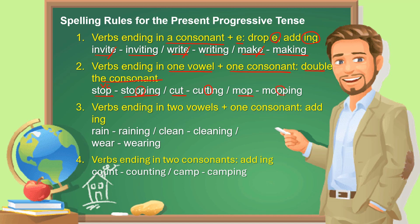Mop → mopping. Rule 3: verbs ending in two vowels plus one consonant — just add -ing. Rain: two vowels, one consonant → raining. Clean → cleaning. Wear → wearing.